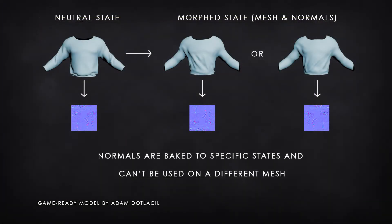The first idea was to create multiple meshes with the same topology and bake a specific normal map for each, so that I would morph both the mesh and the normal map. However, I realized that by doing so I am restricted by the mesh's normals and am stuck with just one normal map per mesh.